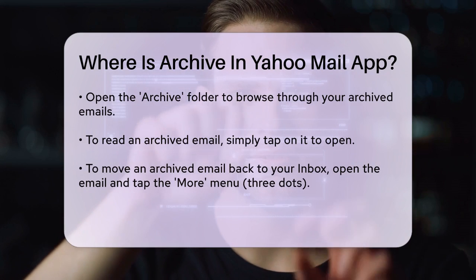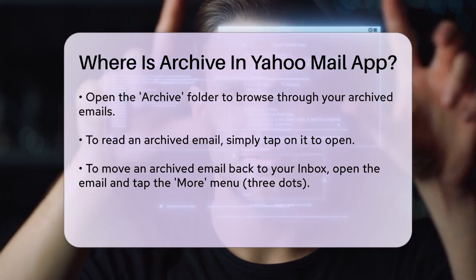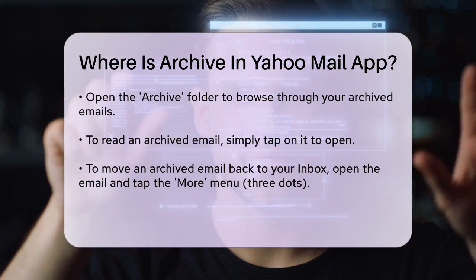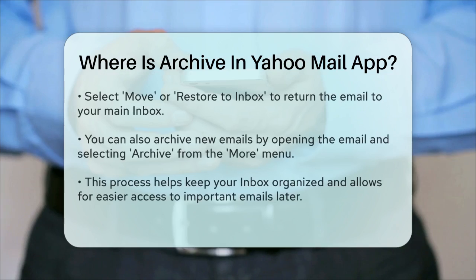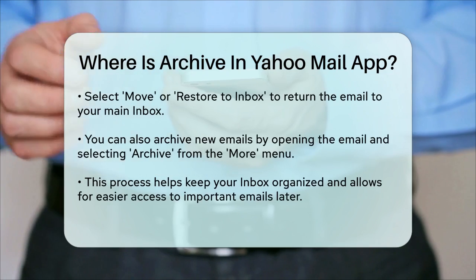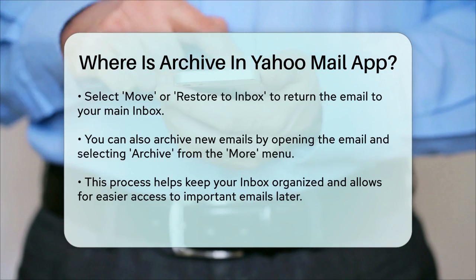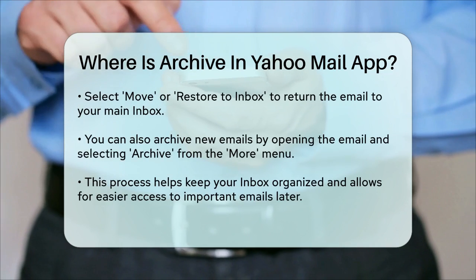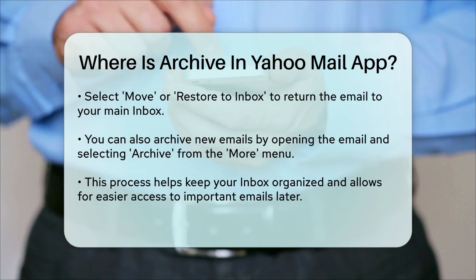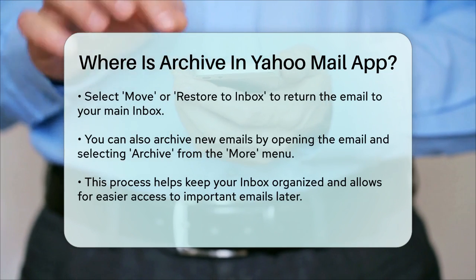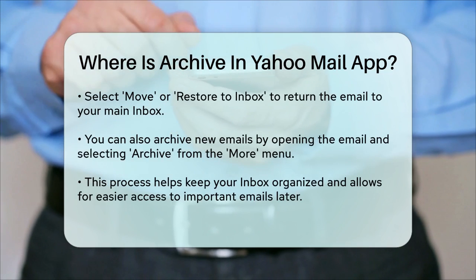Using the Yahoo Mail app, you can also archive new emails directly. To do this, open the email you want to archive, tap the More menu, and select Archive. This will move the email from your inbox to the Archive folder.